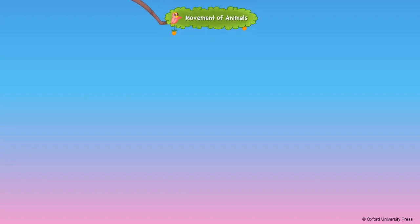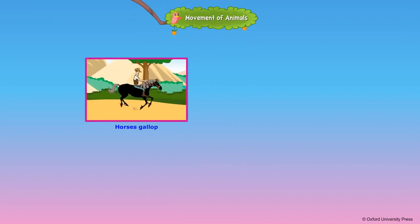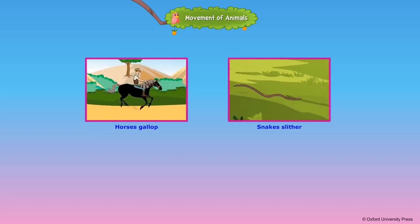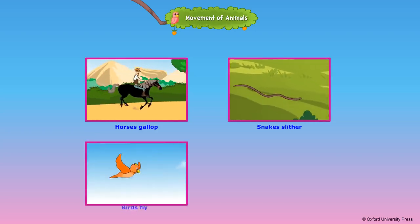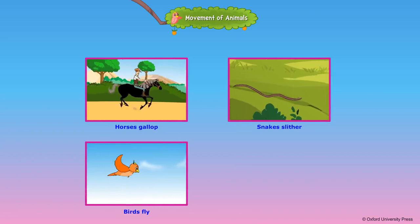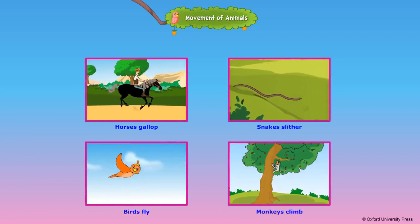Animals move in different ways depending on the shape of their body and the environment they live in. Horses gallop. Snakes slither because they have no legs. Birds fly because they have wings. Monkeys climb trees.